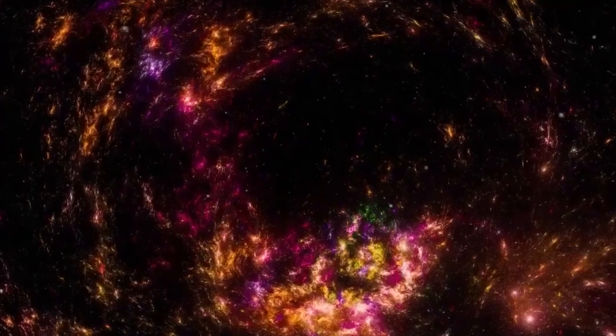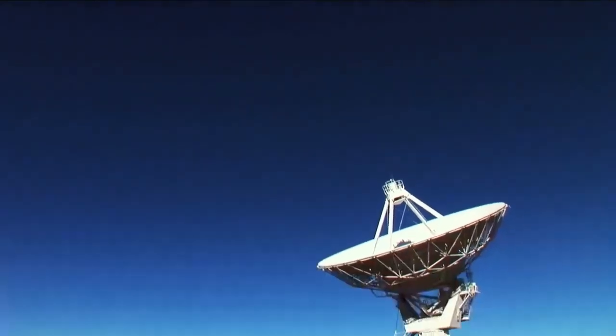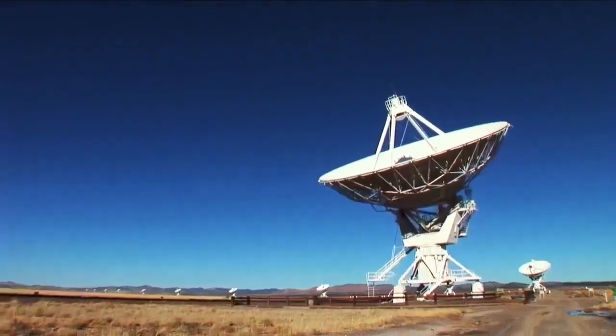A supernova is one of the most powerful occurrences in the universe, representing the death of a star and simultaneously building conditions for forming new celestial bodies. When Betelgeuse finally explodes, it will be an impressive view, a visible occurrence even during daylight and brighter than the moon, glowing for weeks or even months during nighttime.